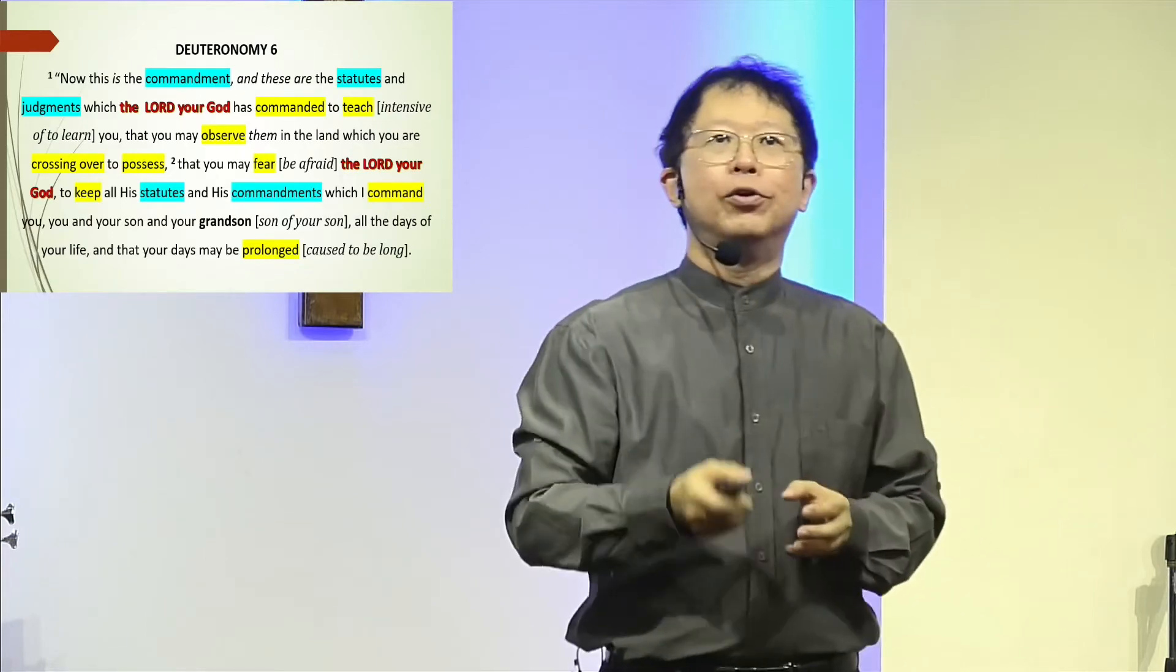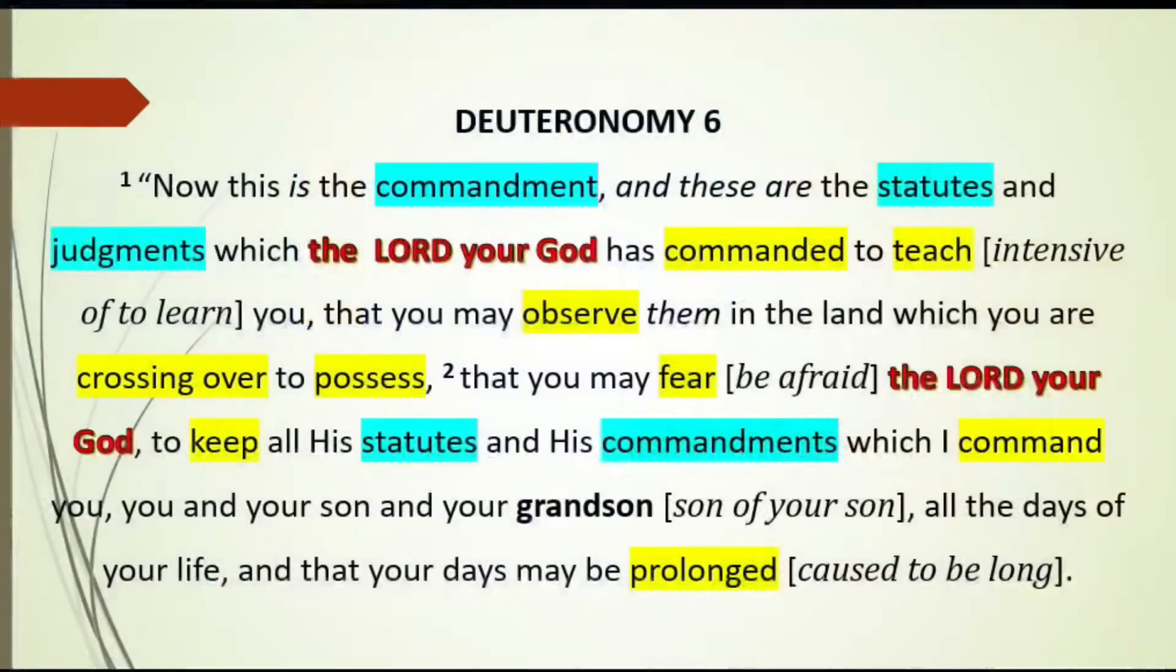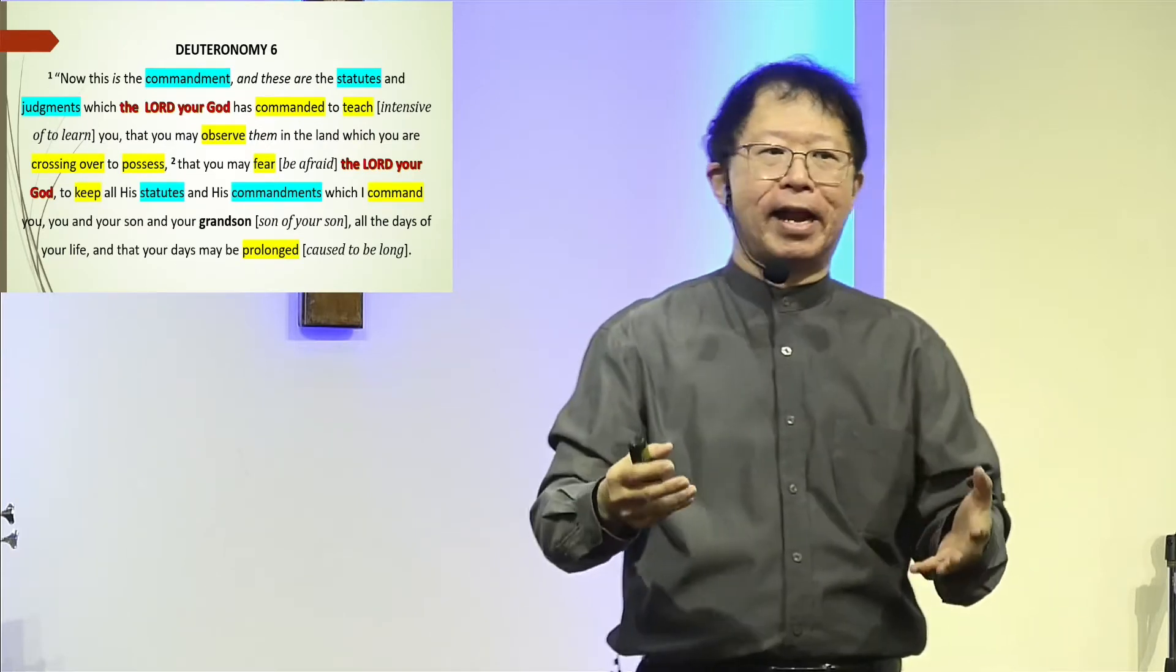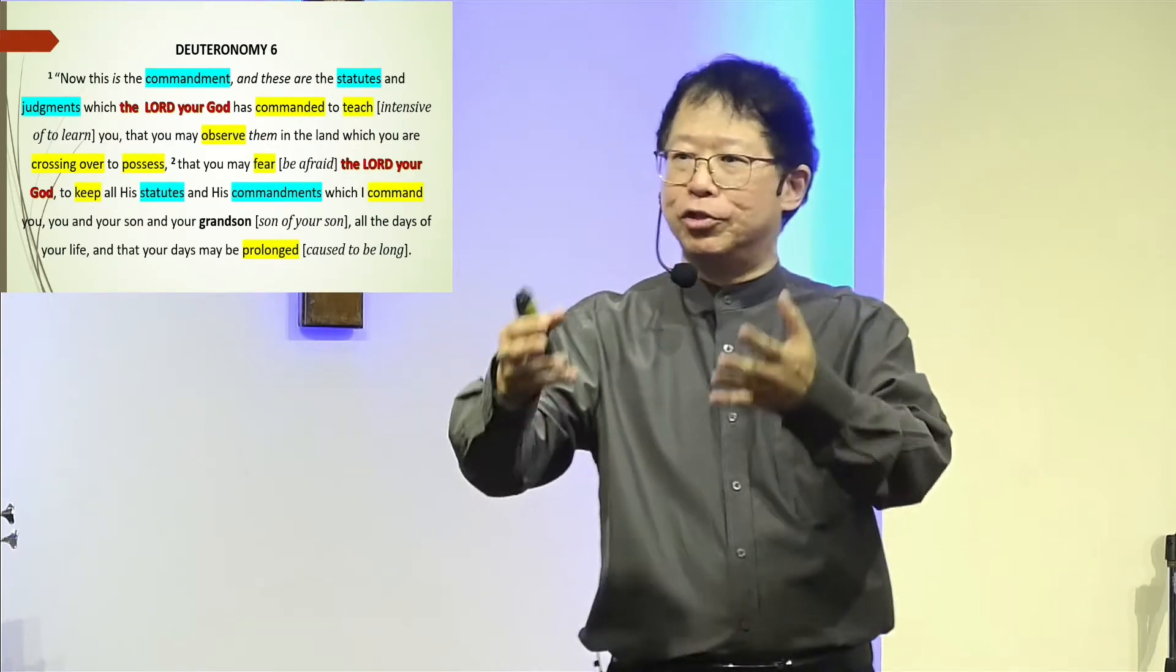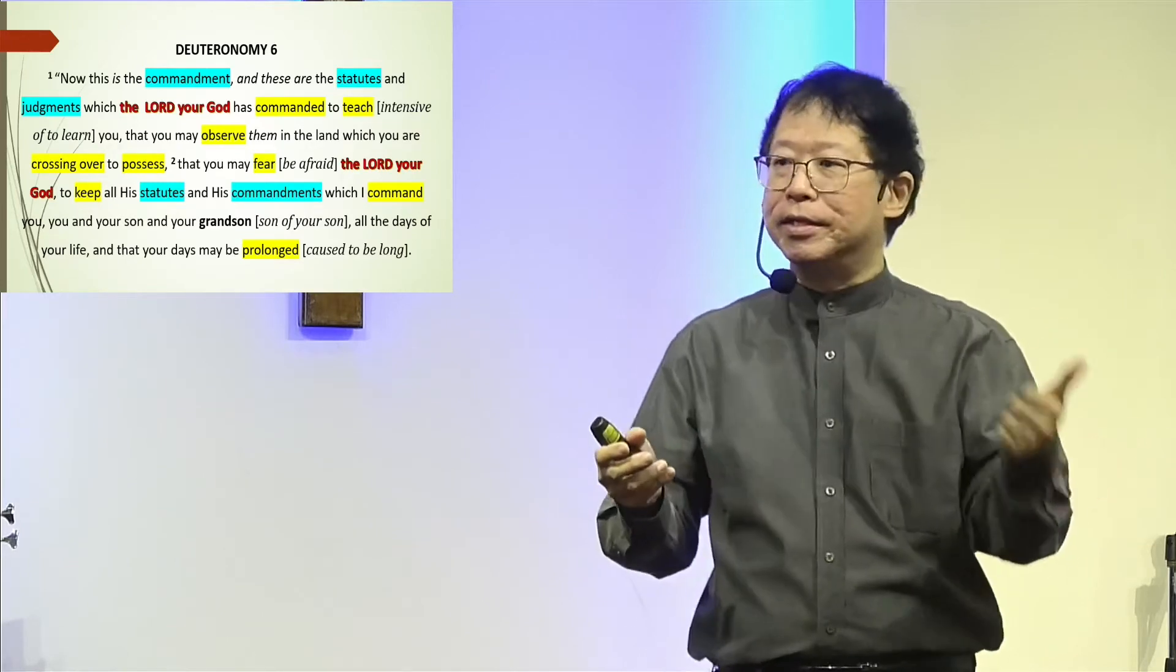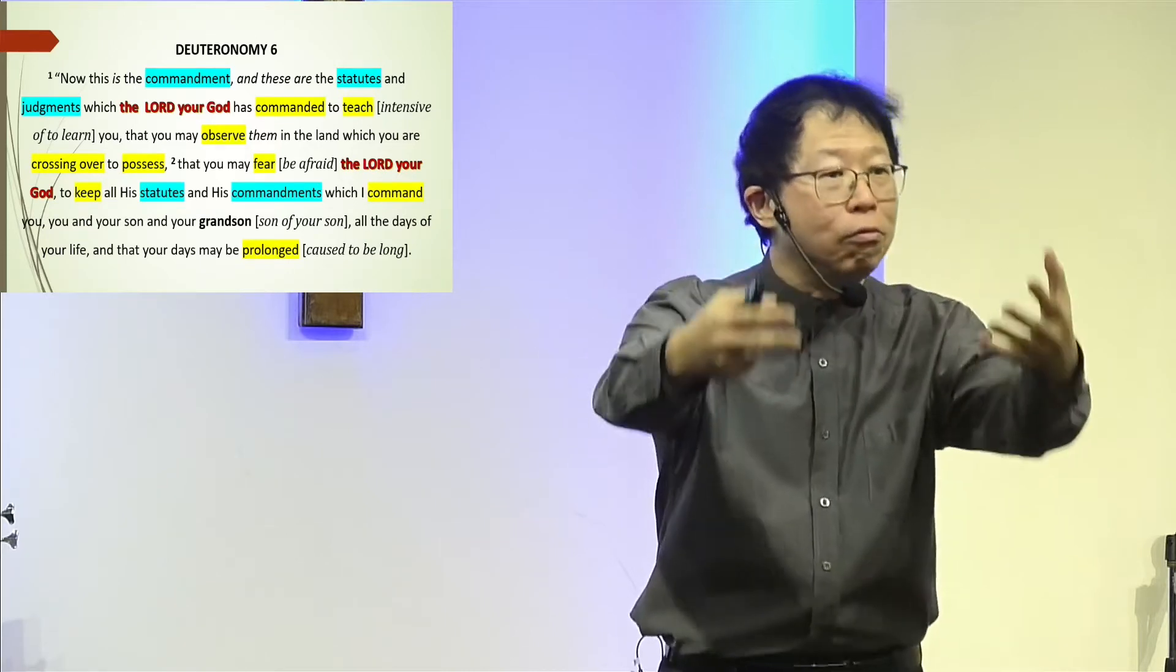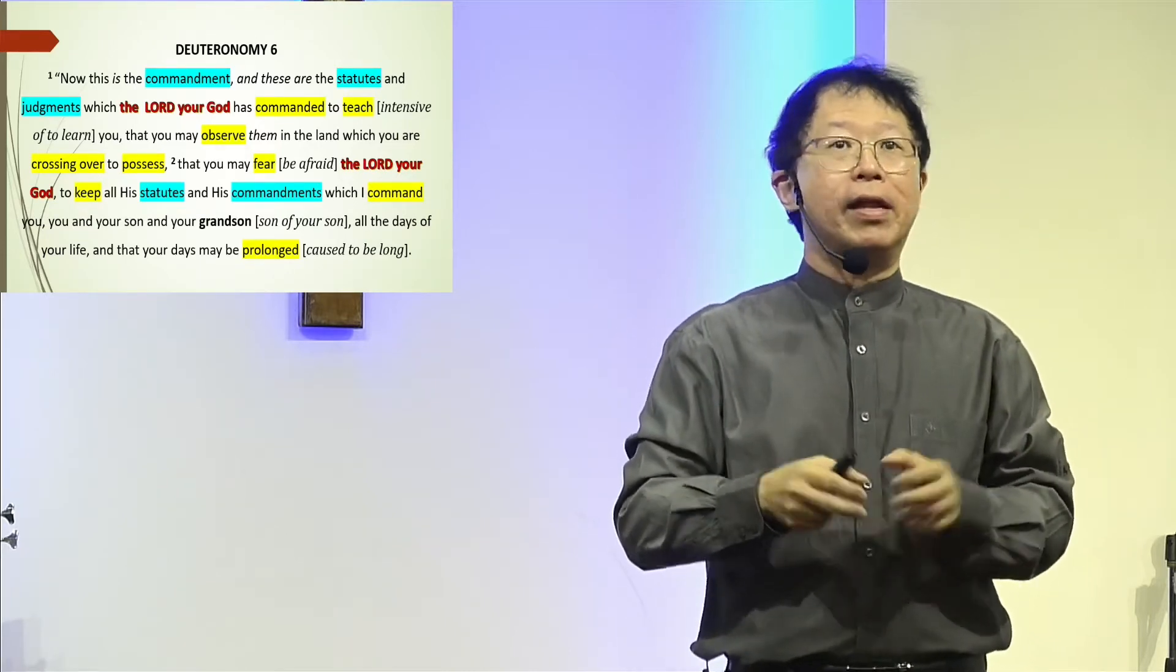But in the Hebrew way, which is very similar to the Chinese way, to learn is to use the cane. And then when they learn, they will teach their children, and so that you may observe them in the land which you are crossing over to possess. Because when you cross over to inherit the land that God is giving them, God has rules. So, learn this. God is essentially telling them, my land, my rules. So, when you go in and inherit this land that I've promised to Abraham, Isaac, and Jacob, there are rules. The commandments, the statutes, and the judgment. So that when you go in, you do what I tell you, and then they'll be great.